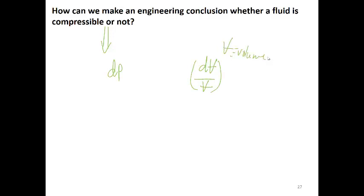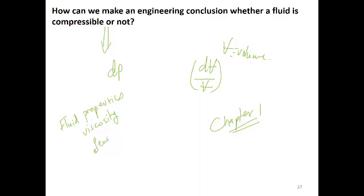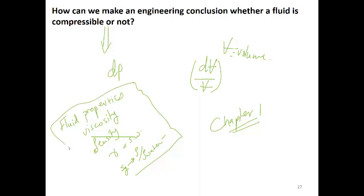That concludes chapter one, which is essentially a review of fluid properties covered in previous courses — including viscosity, density, specific weight γ, and specific gravity (defined as density divided by density of water). Please work through the examples, try to understand them, and bring any questions to Monday's class. Thank you.